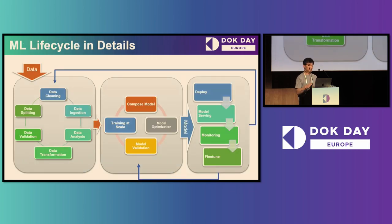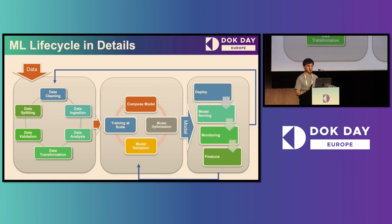Let's dive into the detail of the ML lifecycle and have a clearer picture. If you try to search 'ML lifecycle', you will see a lot of different flows and diagrams — here is just one of them. But they all carry the same message: the end-to-end ML lifecycle is extremely complicated. You can still see the three phases: the data phase, the model phase, and the deployment phase.